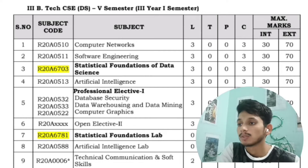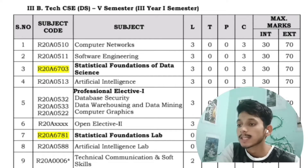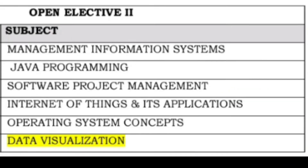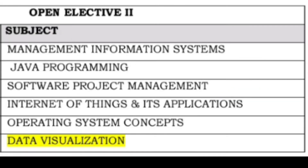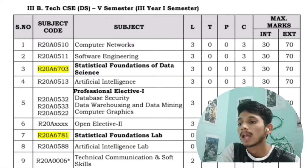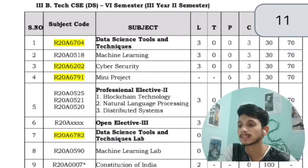In the first semester of third year, you will have Computer Networks, Software Engineering, Statistical Foundations of Data Science, Artificial Intelligence, Technical Communication and Soft Skills, and Professional Elective 1, which contains Database Security, Data Warehousing and Data Mining, and Computer Graphics. Open Elective 2 includes Management Information Systems, Java Programming, Software Project Management, Internet of Things, and Operating System Concepts. Labs include Statistical Foundations and Artificial Intelligence.